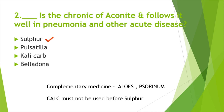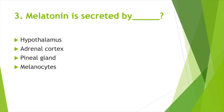Melatonin is secreted by — Option A: Hypothalamus, Option B: Adrenal cortex, Option C: Pineal gland, Option D: Melanocytes. Answer: Option C, Pineal gland.